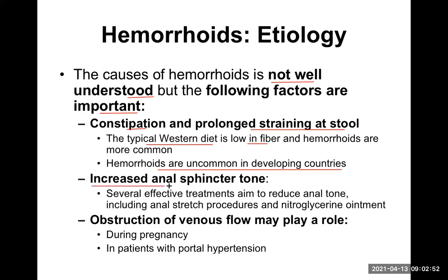The second important factor is increased anal sphincter tone. Several effective treatments aim to reduce anal tone, including the anal stretch procedure and nitroglycerin ointment. These are important treatments for hemorrhoids. The anal sphincter is contracted and has increased tone — probably due to some nearby inflammation or irritation — and that is the reason these treatments are applied.